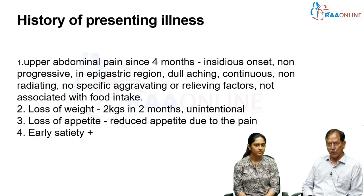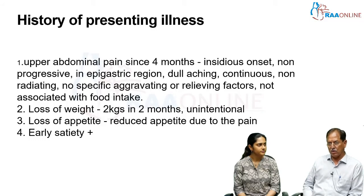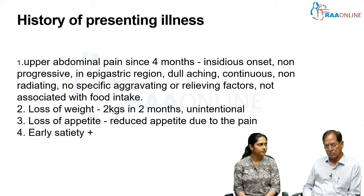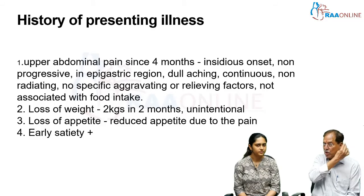There is loss of weight — 2 kilos in 2 months — which is unintentional. Loss of weight is usually a constitutional symptom. Given her age being 50 years, there is suspicion of some form of malignancy. Since it is unintentional weight loss, you have to think in terms of malignancy.